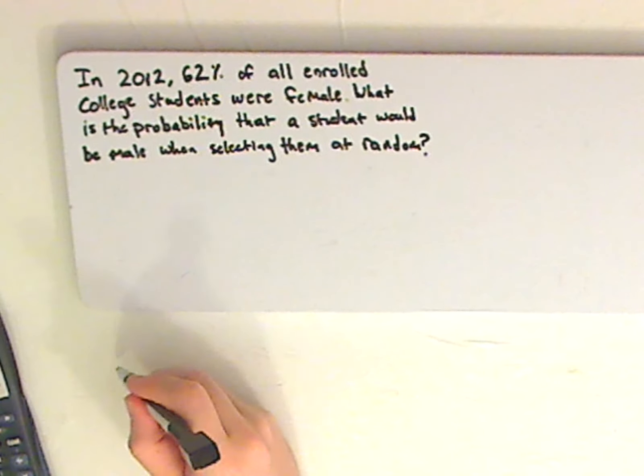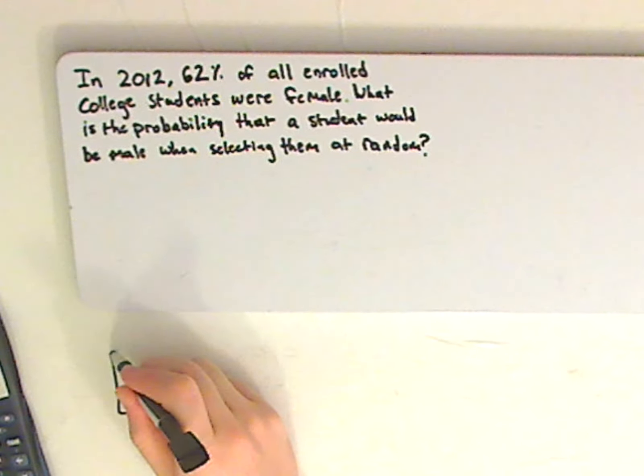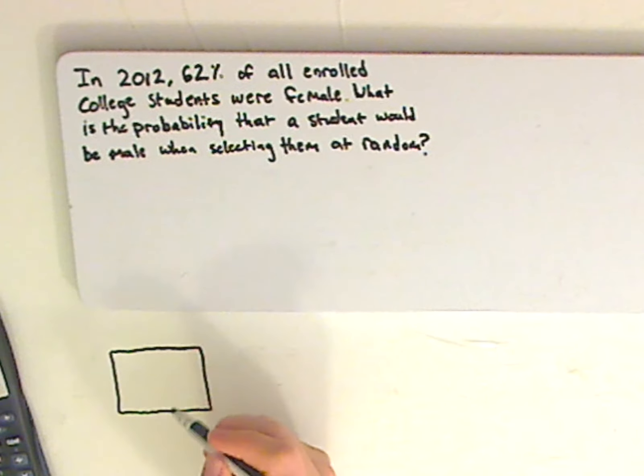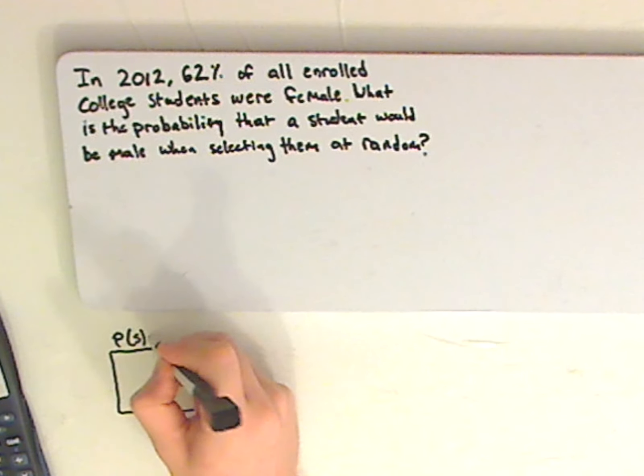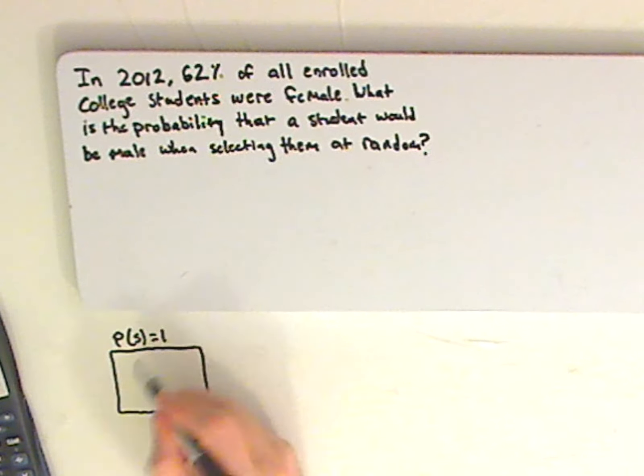Now, the rule basically states that this box represents the probability of the sample space. And the probability of the sample space is 1, right? Because all the probabilities within this space, when you add them together, equal 1.